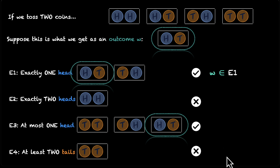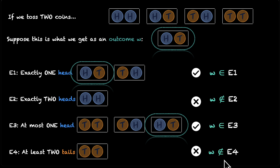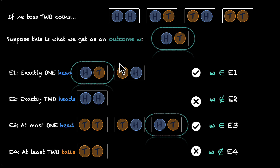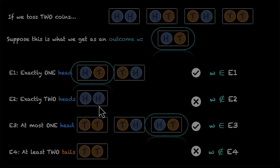In math, that's how you write it: W belongs to E1, does not belong to E2, belongs to E3, and does not belong to E4. This is how you check whether an event has occurred or not — you basically look at the outcome, and you see whether that outcome is a subset of that event or not. If it is a subset, the event has occurred. If it is not a subset, the event has not occurred.